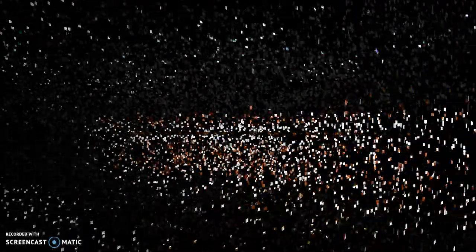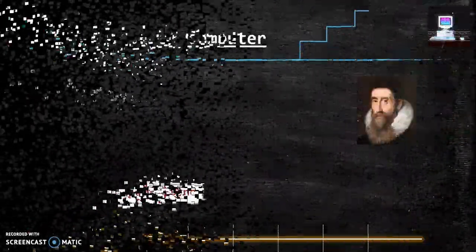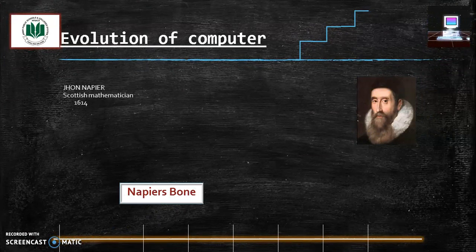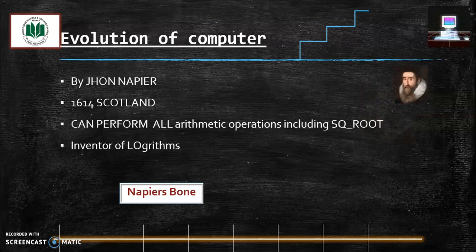Next one is Napier's Bones. John Napier, a Scottish mathematician. This is the first machine which is able to calculate all the arithmetic operations: multiplication, division, taking the square root.